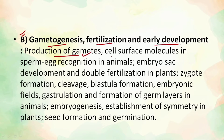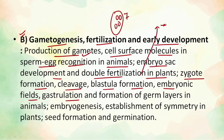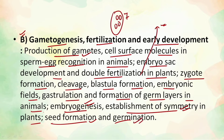The second portion covers gametogenesis, fertilization, and early development. This includes production of gametes, cell surface molecules, sperm-egg recognition in animals, embryo sac development, double fertilization in plants — topics we studied during graduation. Then we have zygotic formation, cleavage, blastula formation, embryonic fields, gastrulation, and formation of the germ layers in animals.